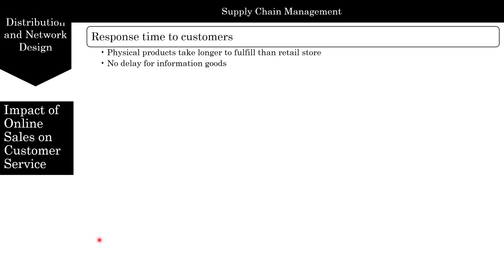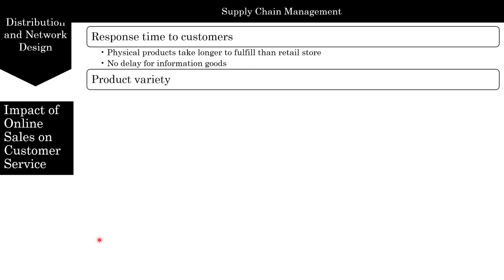Remember, going back 20 to 25 years ago, a movie required buying a DVD, music came on a CD, and a book was a physical product. But once you are able to digitize it, you can speed up the response to the customer using online channels.